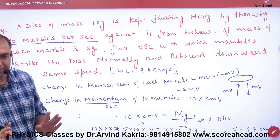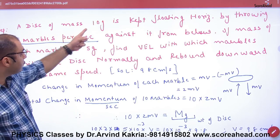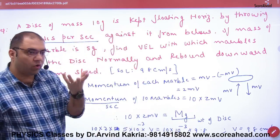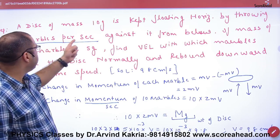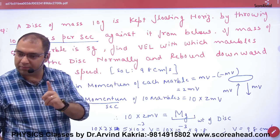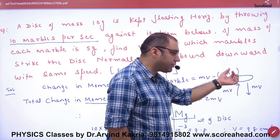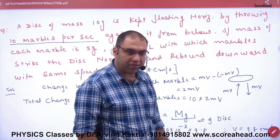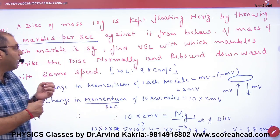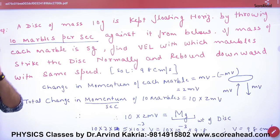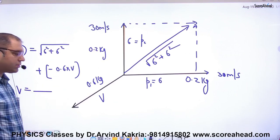The disk has mass 10 grams and is kept floating horizontally by throwing 10 marbles per second against it from below. The marble comes from below, hits, and bounces back. This happens 10 times per second. Each marble is 5 grams. Find the velocity with which marbles strike the disk normally and rebound downwards.